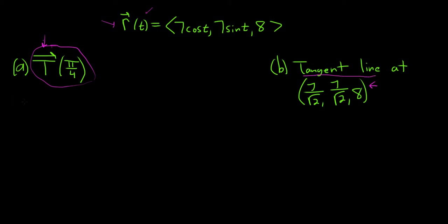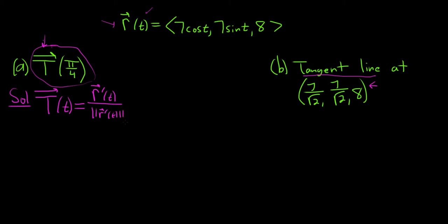Let's start by finding the unit tangent vector. The formula for the unit tangent vector is big T of little t, and it's equal to the derivative of our vector-valued function divided by the magnitude of the derivative.